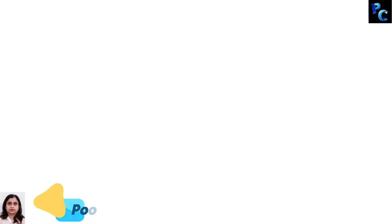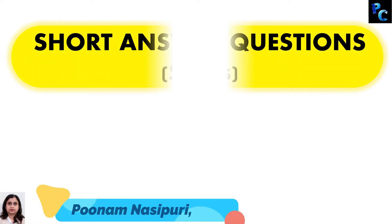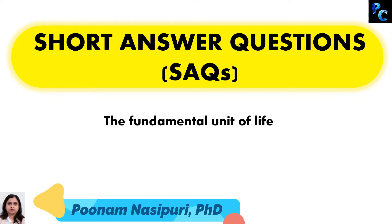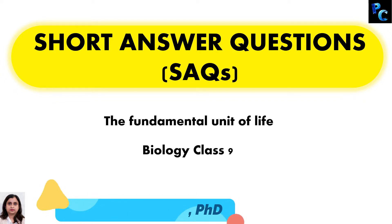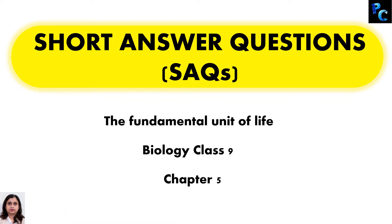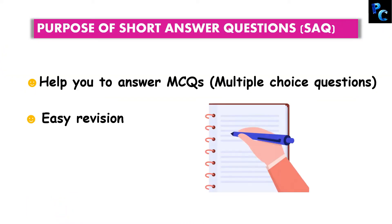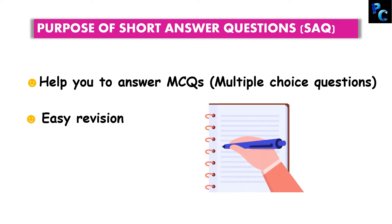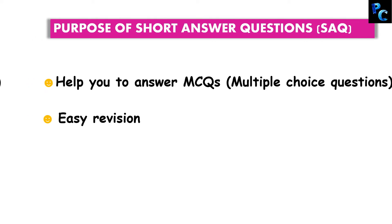Hello students, welcome back. Today we are going to solve short answer questions. The chapter is The Fundamental Unit of Life, that is Biology Class 9 Chapter 5. So grab a notebook and a pen and write the answers yourself so that you can evaluate how well you are prepared. Let's get started.